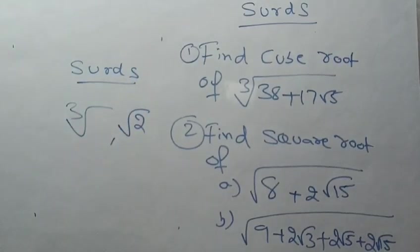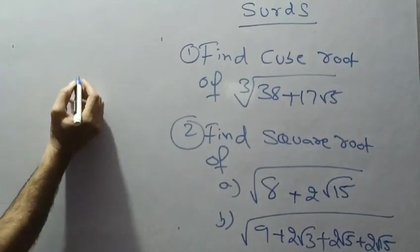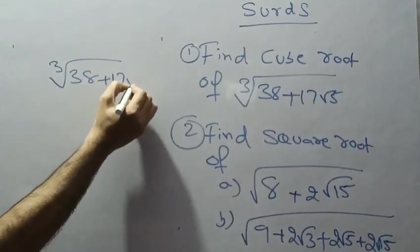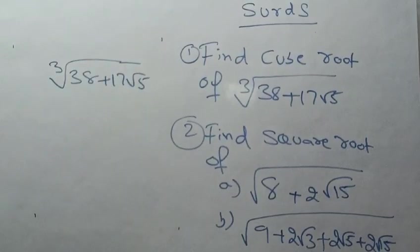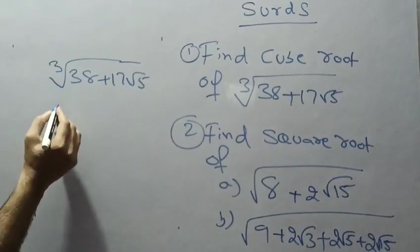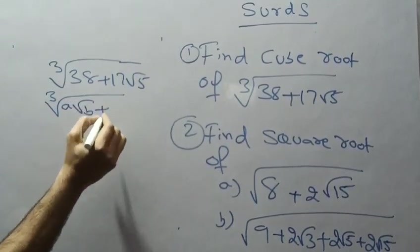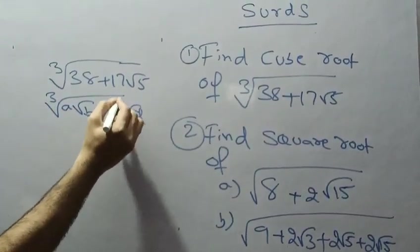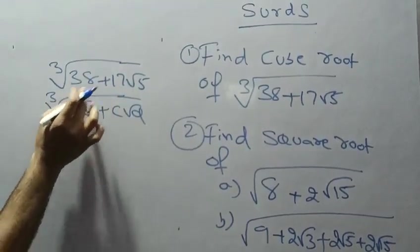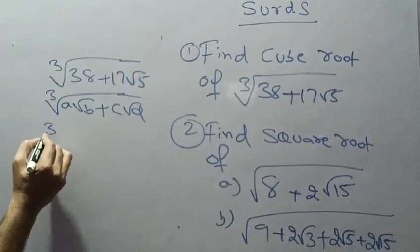The first problem given is: cube root of (38 + 17√5). To apply the shortcut method, the problem should be of the form a√b + c√d. Here we have 38, but √b is not present, so we have to adjust it into the form a√b.